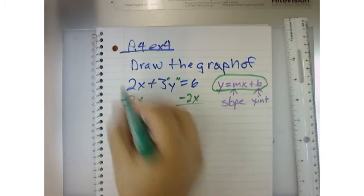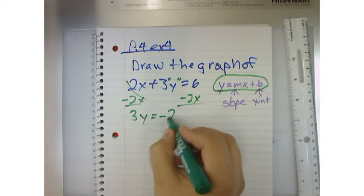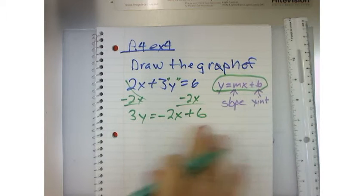So these will cancel. And then I get 3y is equal to... Now, I want to put the negative 2x in the front, because it kind of looks like that mx plus b sort of thing, right?